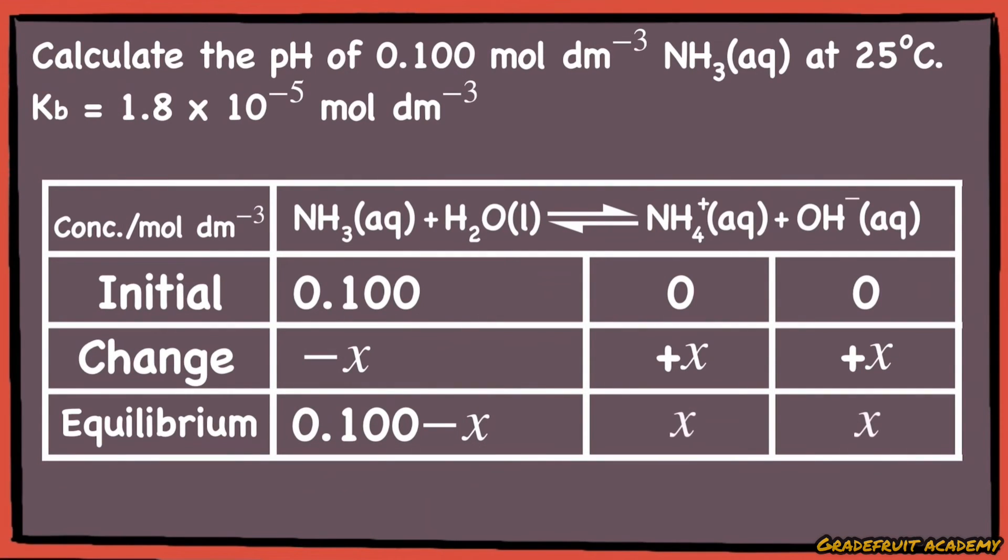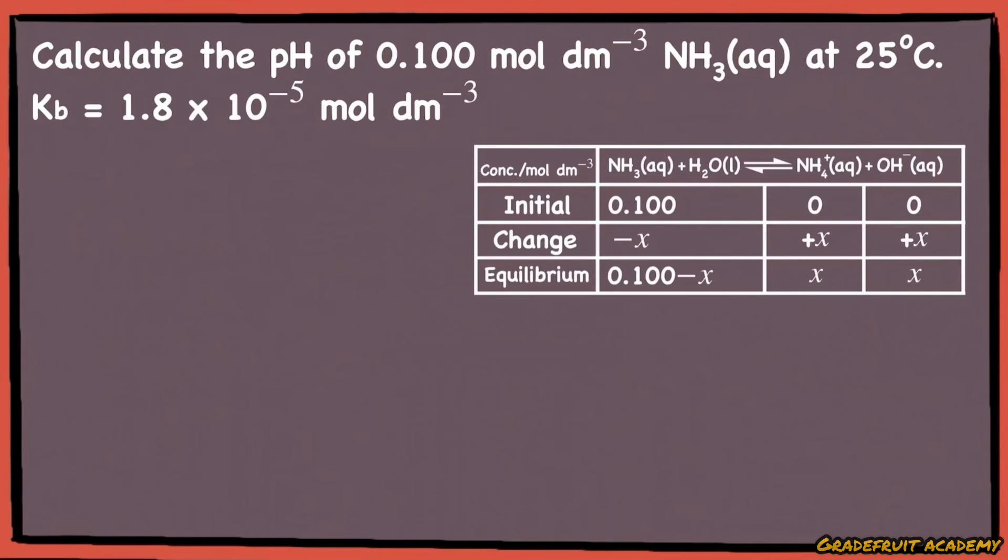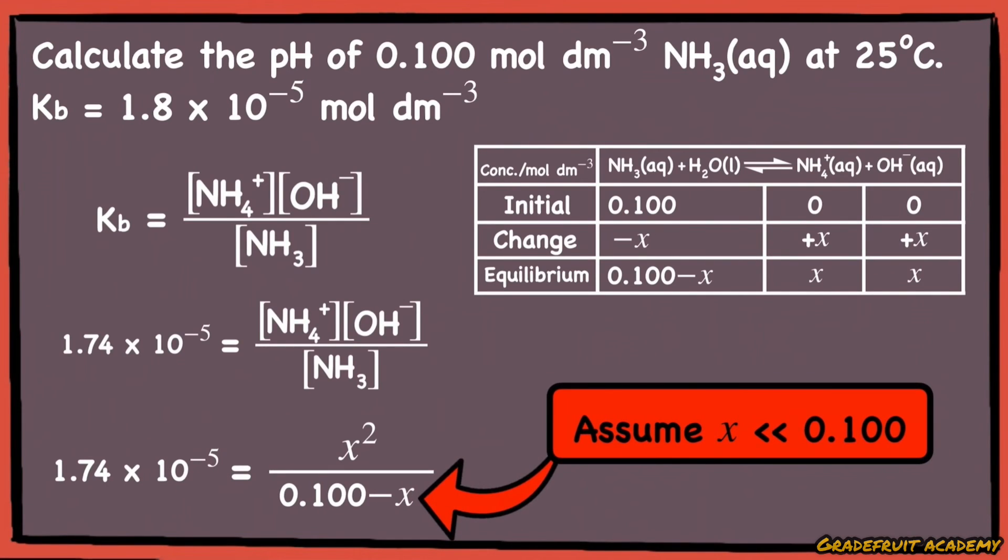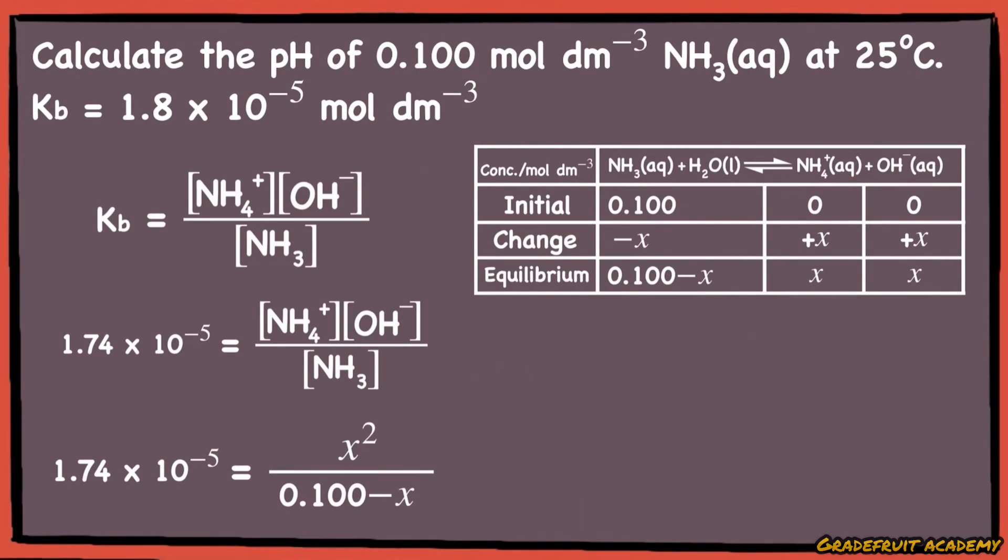Then, since we want to find the unknown x, we will make use of the Kb expression. Since ammonia is a weak base, we can assume that x is very much smaller than 0.100. Hence we can rewrite the denominator to be effectively just 0.100 instead.